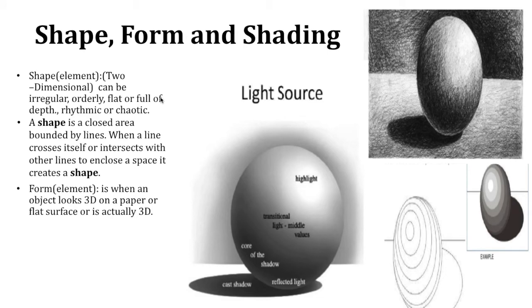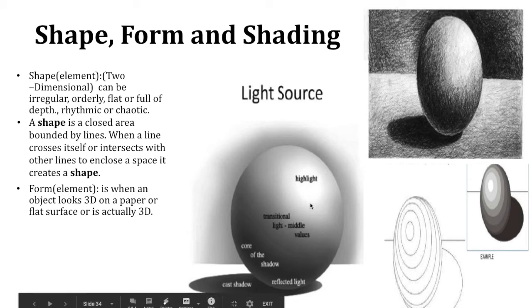Shape is a closed area. A form is 3D. So shape is 2D and then form is 3D. Shapes can be flat, dull. There's lots of different ways that a shape can look. Just on this screen alone, you can see what shape is doing.